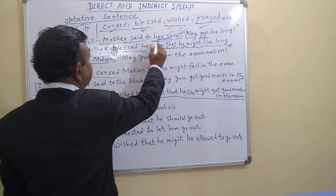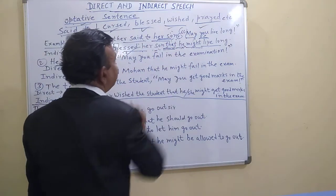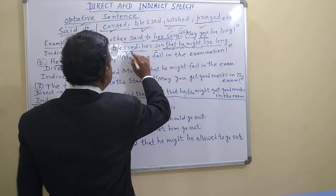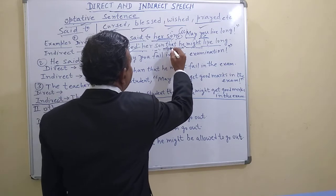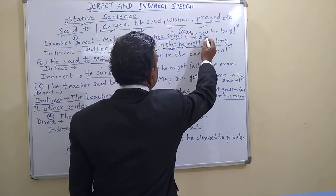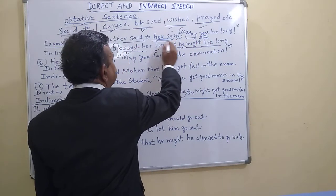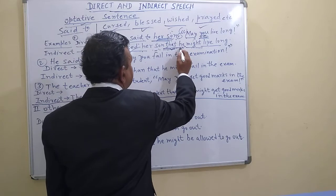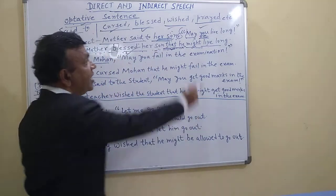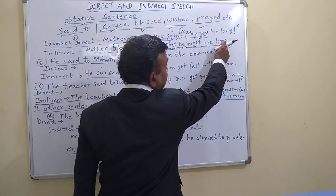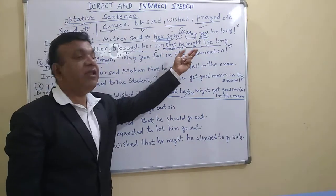To summarize what you do: 'said to' changes to 'blessed,' the comma and inverted commas are removed and replaced with 'that,' and 'you' is changed according to the object of the reporting verb — here, 'her son' — so 'you' becomes 'he.' 'May' changes to 'might.' So the result is an assertive sentence: 'Mother blessed her son that he might live long.'